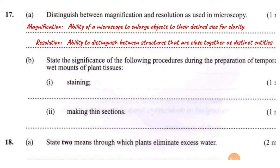Moving on to part B: state the significance of the following procedures during preparation of temporary wet mounts of plant tissues. Staining is adding a dye. Many structures in organisms tend to be clear and transparent, making it challenging to differentiate one from another. When the dye is added, structures absorb the dyes at different rates — one turns darker than the other — making it easier to differentiate between structures. Staining enhances the clarity of objects and makes specimen details clearer to see.